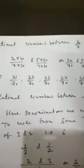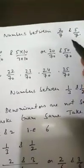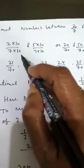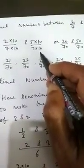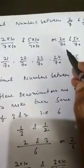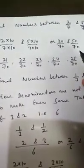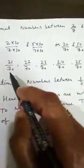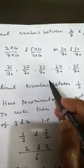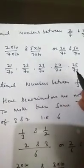Now one more example: how to find rational numbers between 2 by 7 and 5 by 7. We follow the same process — multiply numerator and denominator of 2 by 7 by 10, and multiply numerator and denominator of 5 by 7 by 10. They will be changed to 20 by 70 and 50 by 70.